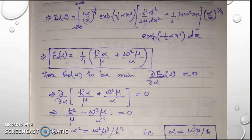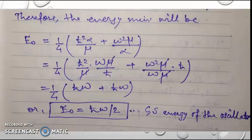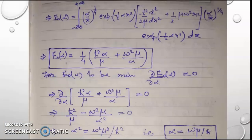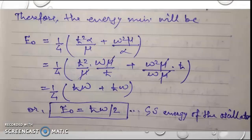We now have an expression for energy E₀(α). For this energy to be minimum, we set ∂E₀(α)/∂α = 0. Differentiating the energy expression with respect to α, we get α = μω/ℏ. Using this value of α in the energy expression E₀(α) = (1/4)[ℏ²α/μ + μω²/α] and solving, we obtain the ground state energy E₀ = ½ℏω. This is the ground state energy of the oscillator.